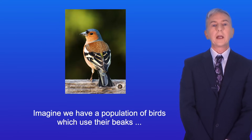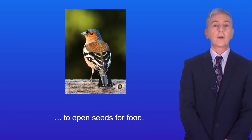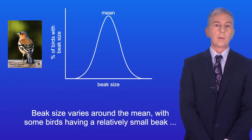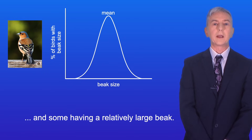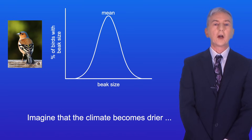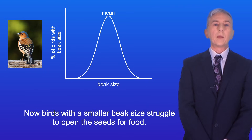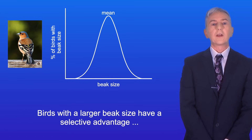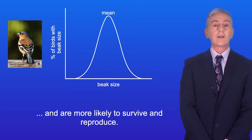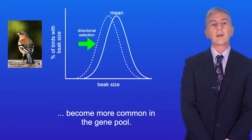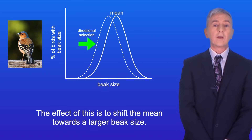Imagine we have a population of birds which use their beaks to open seeds for food. Beak size varies around the mean, with some birds having a relatively small beak and some having a relatively large beak. Imagine that the climate becomes drier and plants produce harder seeds. Now birds with a smaller beak size struggle to open the seeds for food. Birds with a larger beak size have a selective advantage and are more likely to survive and reproduce. Over time the alleles for larger beak size become more common in the gene pool, and the effect of this is to shift the mean towards a larger beak size.